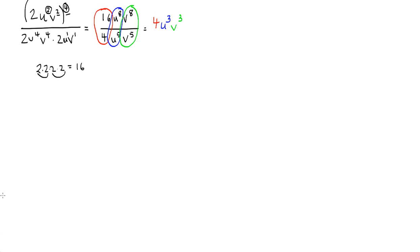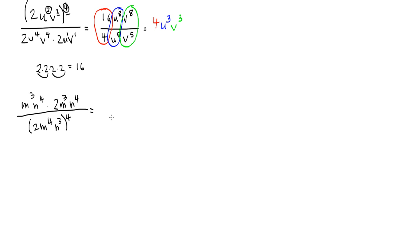Ready for another one? How about m to the third, n to the fourth, times 2m to the third, n to the fourth, all over 2m to the fourth, n to the third, raised to the fourth power. Stop the video now if you want to try it yourself. It's similar to the first one — we'll simplify the numerator and denominator separately before applying the quotient rule.